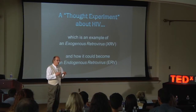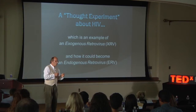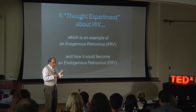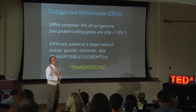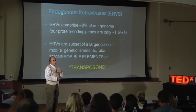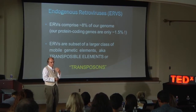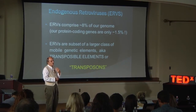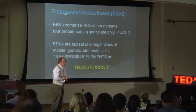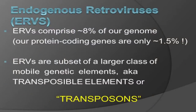It's unlikely that's happened yet, although if HIV was around for a thousand years it could — and at that point it would be an endogenous retrovirus. In fact, this has happened many times during evolution, because 8% of our DNA is endogenous retroviruses, whereas our protein coding genes are only 1.5%. Think about that.